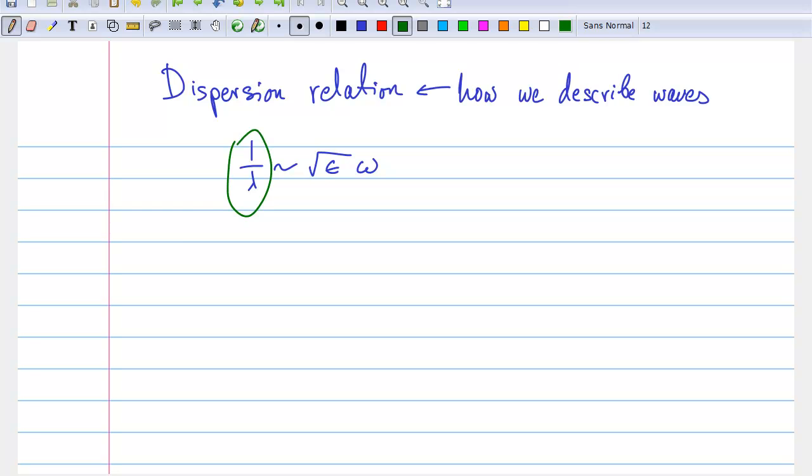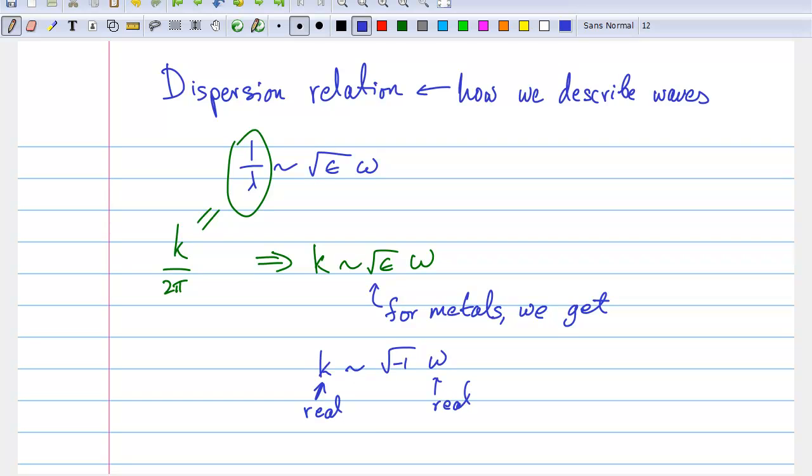And typically, instead of the reciprocal of the wavelength, we write k, which we call the wave vector. By the way, this simple equation can tell us why it is that metals don't transmit light. For metal, epsilon is less than zero. And so when we plug it into the square root in the equation, we get an imaginary number. That makes it impossible to satisfy the dispersion relation, and so we conclude that the wave cannot propagate.